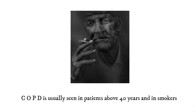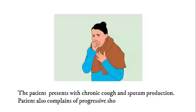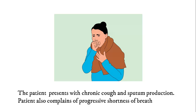Presentation of COPD is usually seen in patients above 40 years and in those who are smokers. The patient presents with chronic cough and sputum production, and in addition complains of progressive shortness of breath.